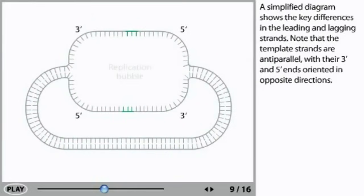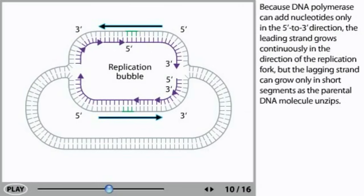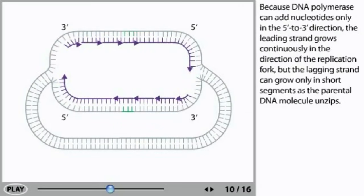A simplified diagram shows the key differences in the leading and lagging strands. Note that the template strands are anti-parallel with their 3' and 5' ends oriented in opposite directions. Because DNA polymerase can add nucleotides only in the 5' to 3' direction, the leading strand grows continuously in the direction of the replication fork. But the lagging strand can grow only in short segments as the parental DNA molecule unzips.